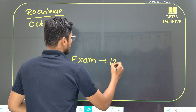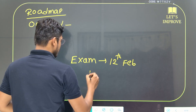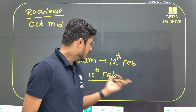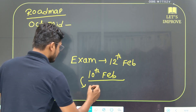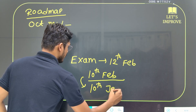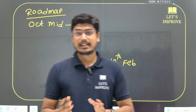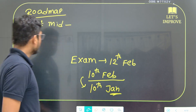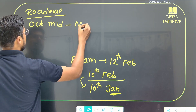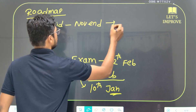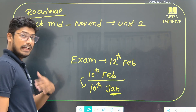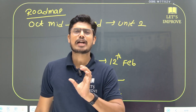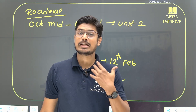We will finish this before the exam date — the exam is on 12th February. In January, we will complete all remaining topics. When we finish in January, you can do a mock test and analysis. So from October mid to November 10th, you can do Unit 2 — meaning Integration, Application of Integrals, Area, and Differential Equations.